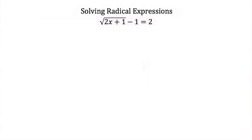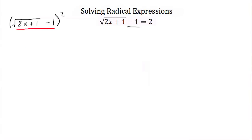Now let's try something a little bit harder. Here we have the square root of 2x plus 1, and then minus 1, is equal to 2. My x is underneath the radical sign, so I need to square both sides. However, this minus 1 on the outside makes that difficult. The key idea is to get your square root term alone on one side of the equal sign first.